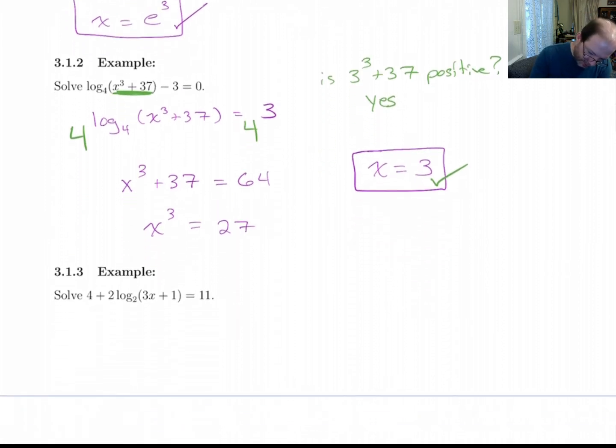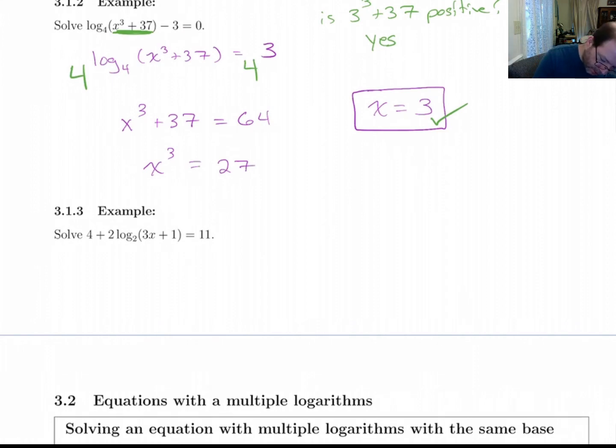One more, solve this thing. Take the 4 off of both sides, you get 7, yeah, 11 minus 4 is 7, divide by 2, so I get 7 halves, and then I'll do 2 raised to this side equals 2 raised to that side. So I get 3x plus 1 equals 2 to the 7 halves. So x is 2 to the 7 halves minus 1 all over 3.